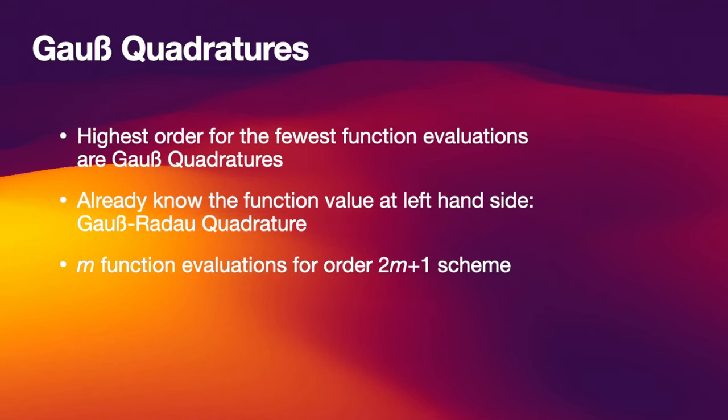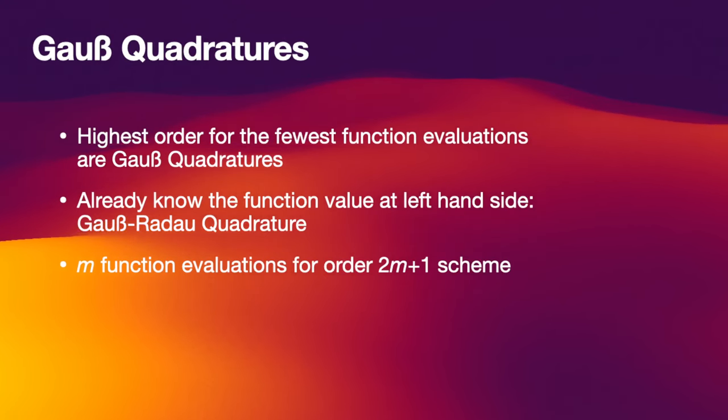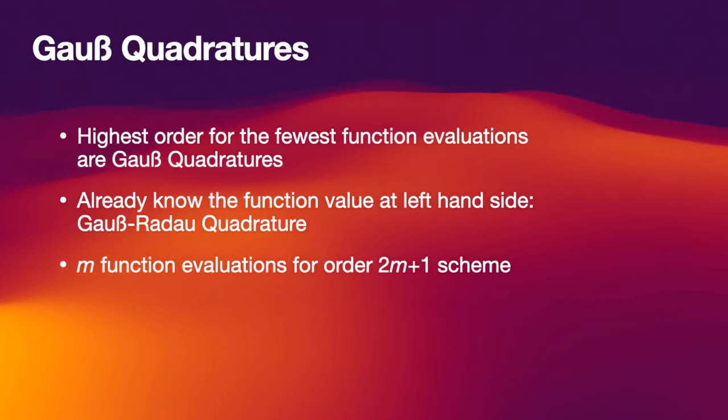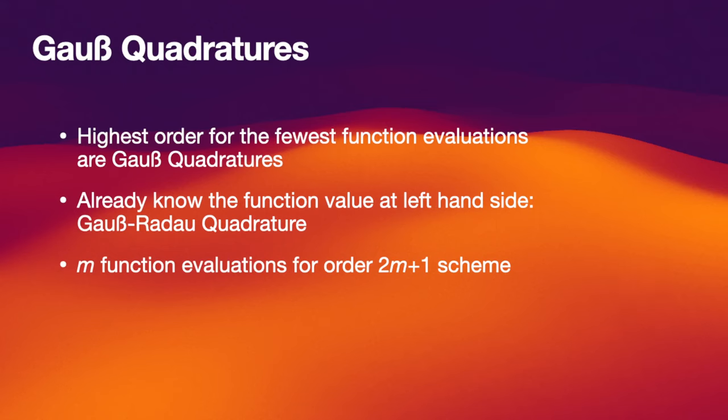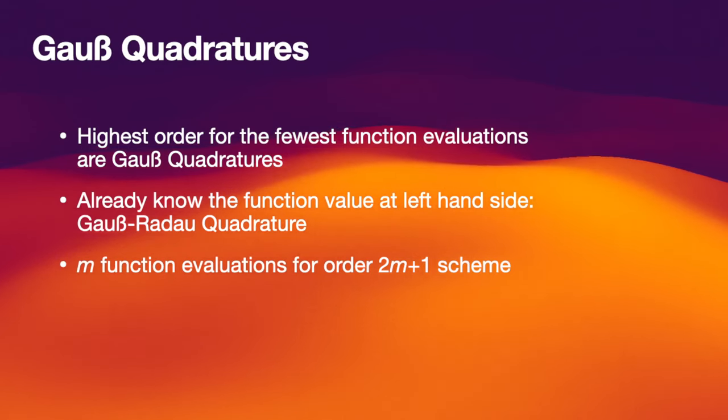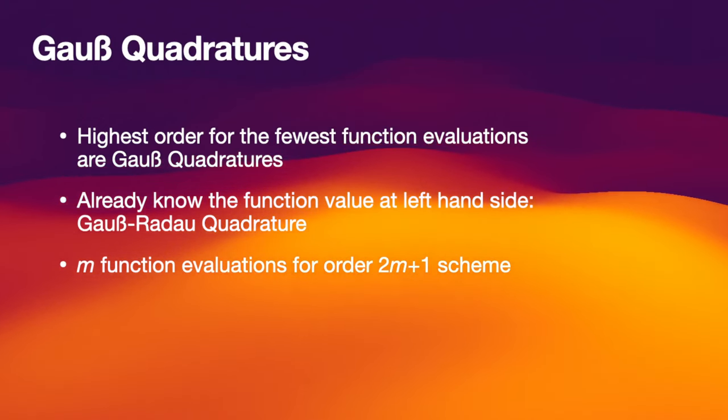There's one special consideration in our case where we want to use this integral representation of an ordinary differential equation. We have the left-hand side given already at the beginning of the interval, because that's just our initial condition for the differential equation. The special subclass of Gauss quadratures that take that into account are called Gauss-Radau quadratures. They have the left-hand point fixed and only vary the other points. For such a Gauss-Radau quadrature, we can have a scheme that has m function evaluations and gives us a 2m plus 1 order scheme for the integral ODE expression that we're solving in the end.